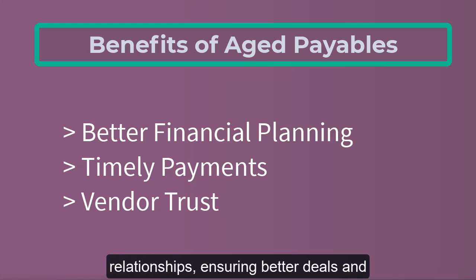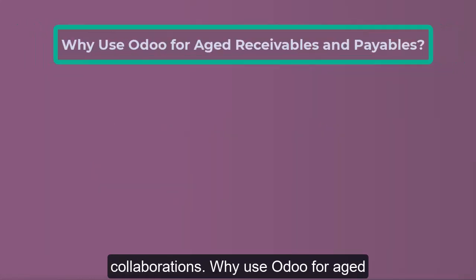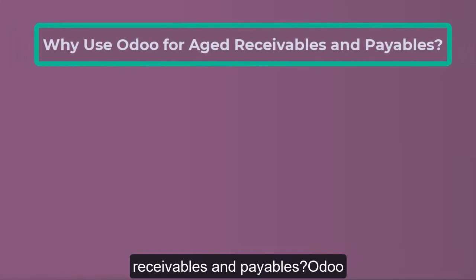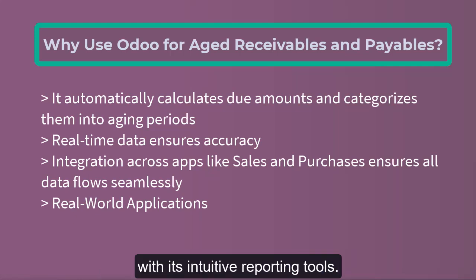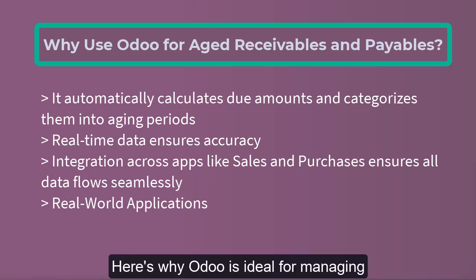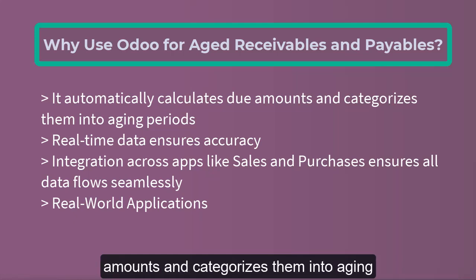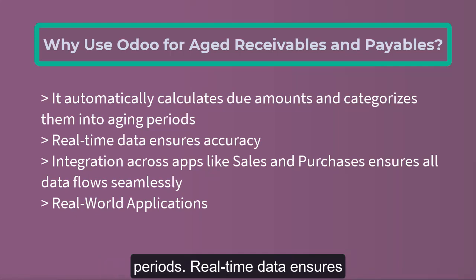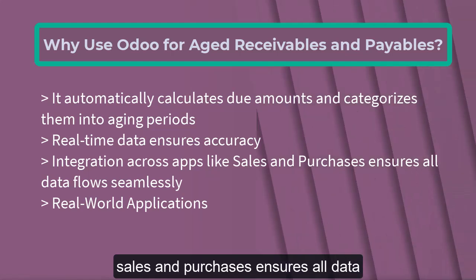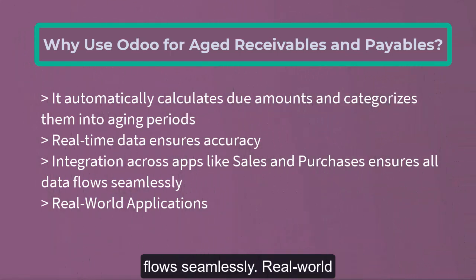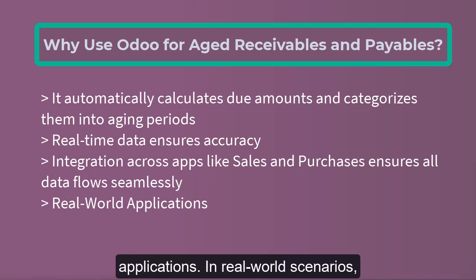Why use Odoo for Aged Receivables and Payables? Odoo simplifies both with its intuitive reporting tools. It automatically calculates due amounts and categorizes them into aging periods. Real-time data ensures accuracy, and integration across apps like Sales and Purchases ensures all data flows seamlessly.